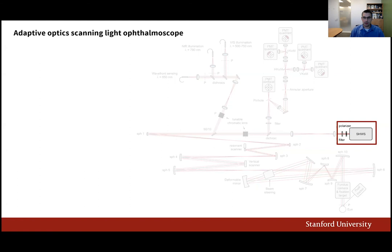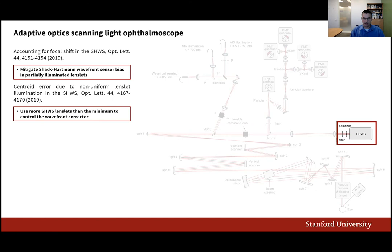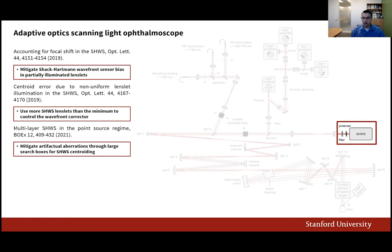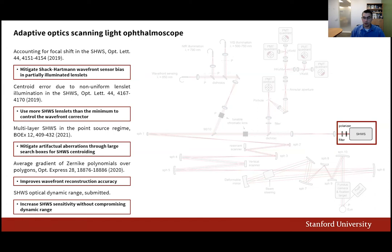During the past six years, we made the following contributions to improve ophthalmic wavefront sensing for AO retinal imaging. First, we identified the source of error in partially illuminated Shack-Hartmann lenslets and corrected it, improving wavefront correction and making AO control loops more stable. Second, we quantified the wavefront error introduced by the Stiles-Crawford effect and illustrated its mitigation through smaller lenslets. We then proposed a centroiding approach that mitigates wavefront errors due to back scattering, derived analytical formulae for more accurate wavefront reconstruction, and formalized the definition of Shack-Hartmann dynamic range to design instruments with almost an order of magnitude higher sensitivity.